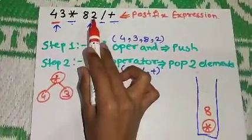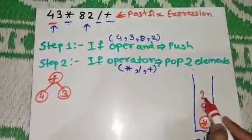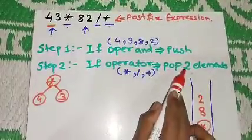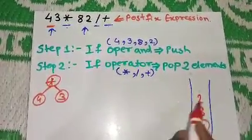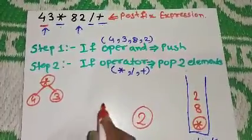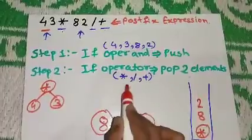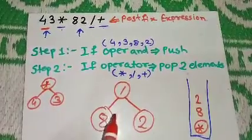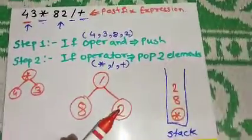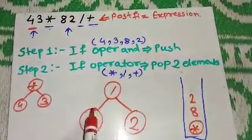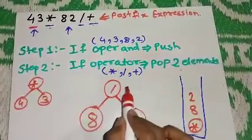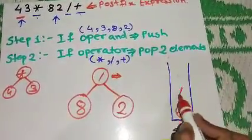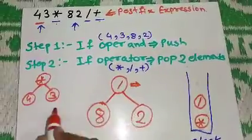The next character is 8, which is an operand, so we push it into the stack. The next character is 2, also an operand, so we push it as well. Then comes division, which is an operator, so we pop two elements — 2 and 8. The first popped element, 2, becomes the right child, and 8 becomes the left child of the division operator. We then push the division operator's address back into the stack.